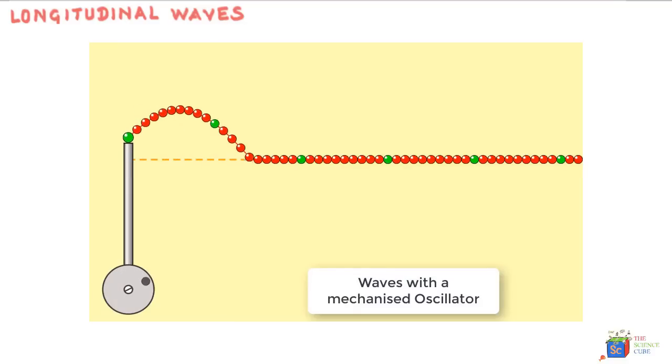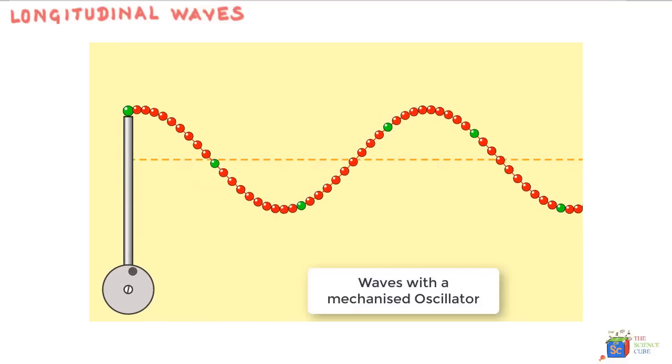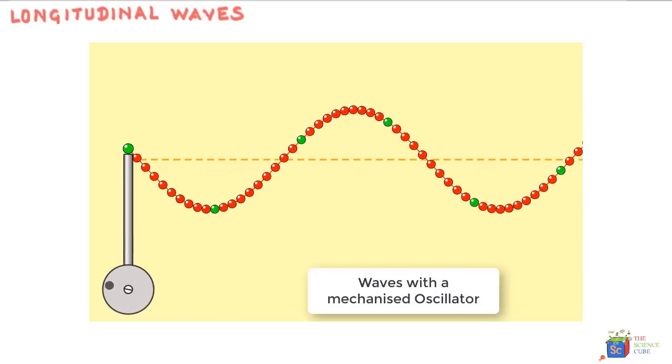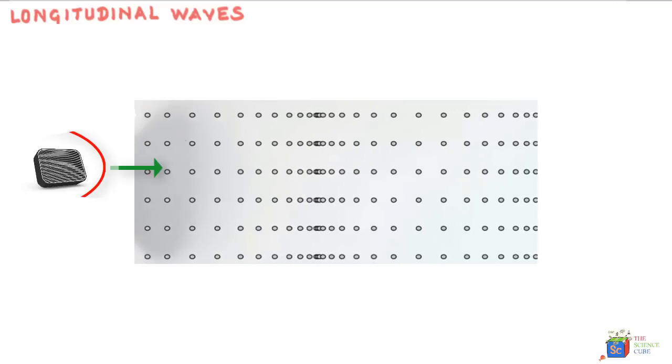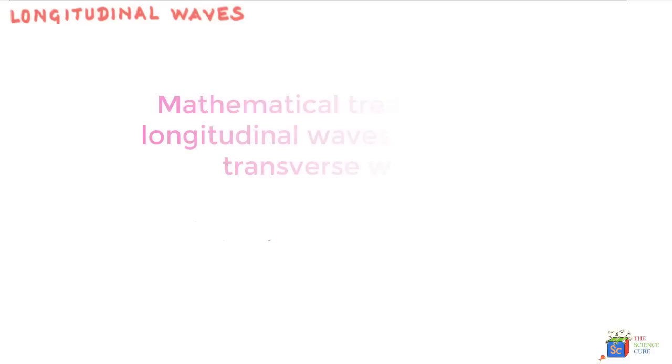So far, we have described mechanical waves more in terms of displacement and confined our discussion to transverse waves only. But there's another type of mechanical wave that we call longitudinal wave, and sound wave is an example of it. Fortunately, the mathematical treatment of longitudinal waves is quite the same as that of transverse waves. Or simply put, the longitudinal waves will have pretty much the same equations to describe the motion as we used in transverse waves.